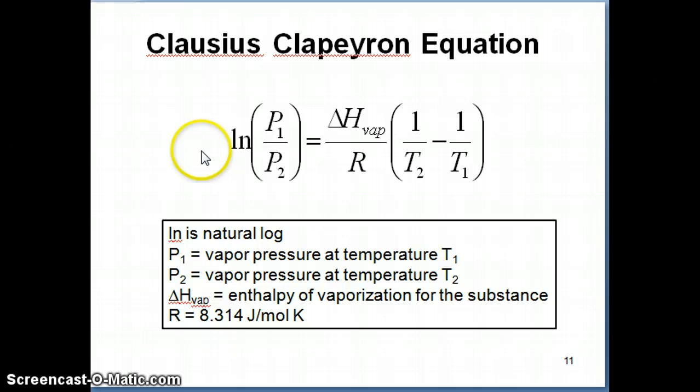So the Clausius-Clapeyron equation says on the left side, ln of P1 over P2 is equal to, on the right side, this whole term here, which is delta H vaporization over R times 1 over T2 minus 1 over T1. So let's just talk about some of these terms here. Ln is, for some of you who have done this math, should know that ln is natural log, so in other words, it's basically taking a log of this term in here, but it's a natural log. So there's a key in your calculator that says ln.